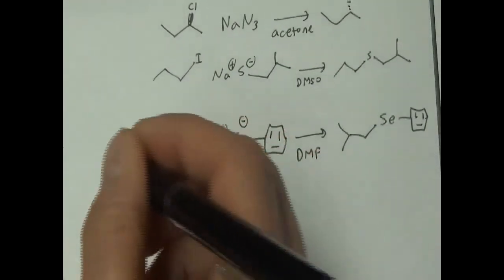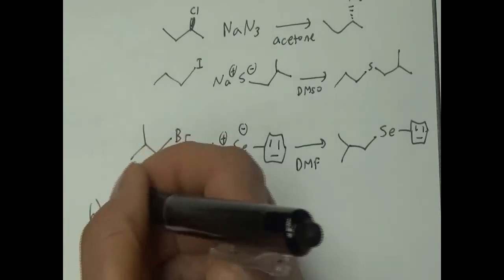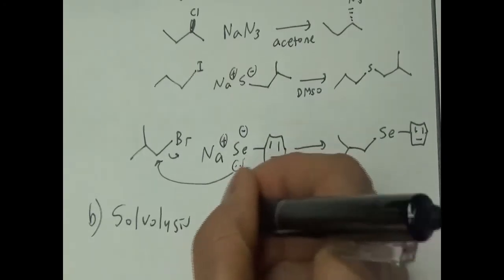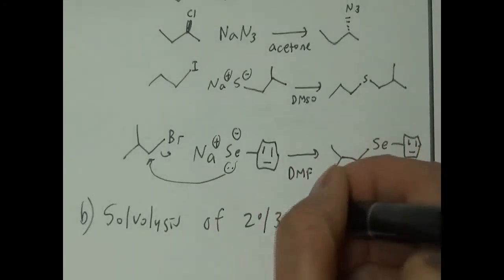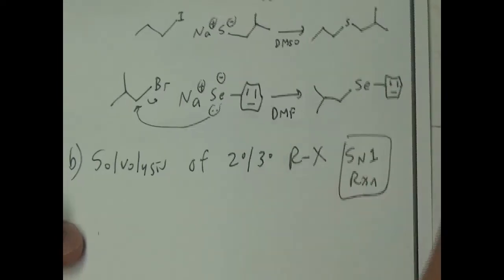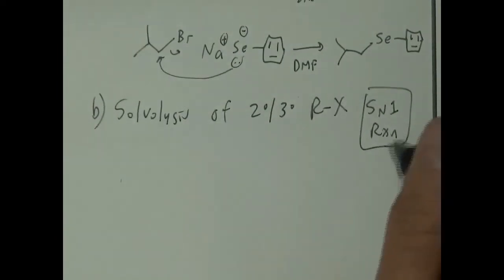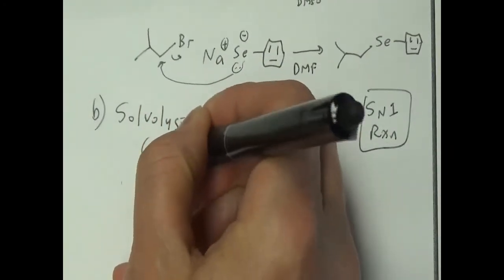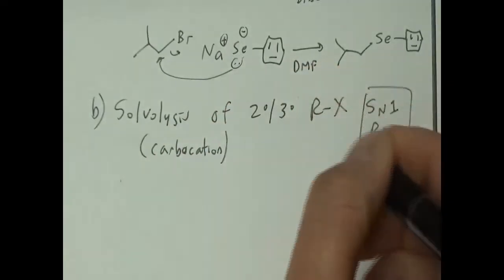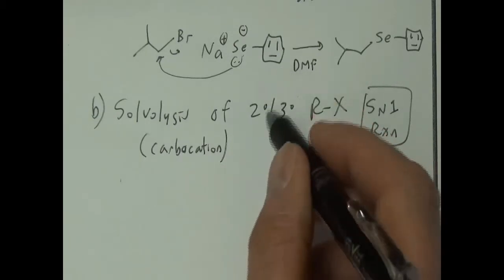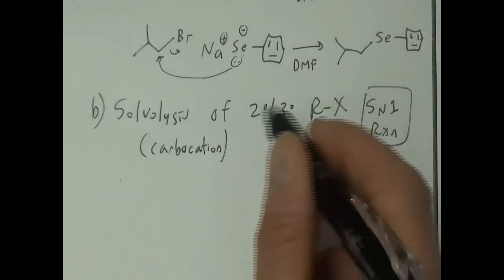That's situation one. The second situation is solvolysis of secondary and tertiary alkyl halides — that's usually the SN1 reaction. It's a carbocation mechanism. Carbocations are definitely possible for tertiary, less so for secondary but still possible. For primary and methyl, you'll never have a carbocation.